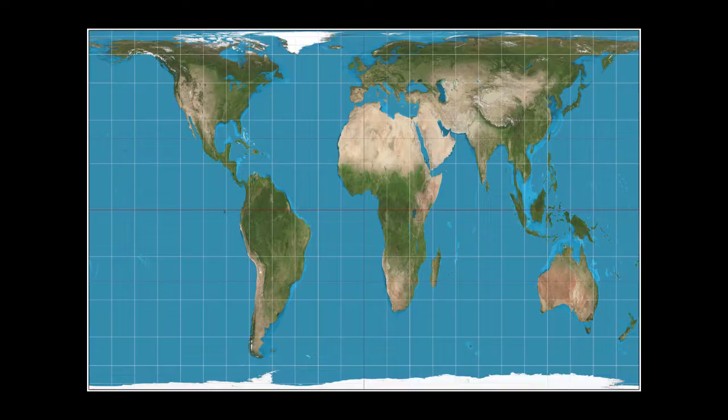So why do we still use the Mercator map to teach children about the world when most of those children are not going to grow up to be sailors? There is a strong argument that it is for geopolitical reasons — that we want to continue to appear bigger and stronger and on top of third world countries. There have been a lot of people trying to get this map switched to another map. Perhaps a more accurate map to use would be the Gall-Peters map. Yeah, kind of weird. But understand that your perception of what the world really looks like isn't accurate at all.